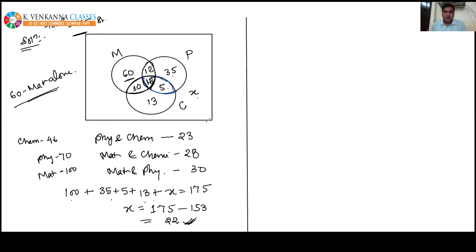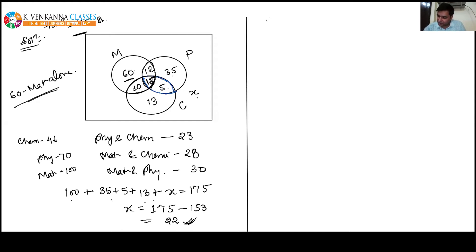I'm giving you the chance to ask doubts from the DPP. If you have any doubts in any problem, tell me the question number, I'll explain it, and after that I'm going to start Inequality. Please ask quickly. Nagis is asking for question number 10, so everyone please open DPP number 3 and come to question number 10.